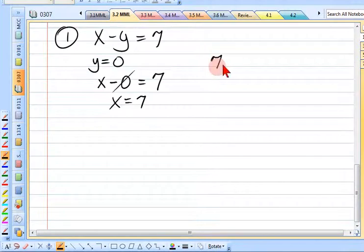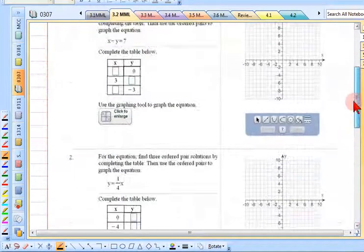Number one has x minus y equals 7. And the first thing they give me is y is 0. So what am I supposed to do? I'm supposed to plug in. I am supposed to plug in in the place. Here's the equation. Here's the given value from a table. And I need to plug it in. It's going to be x minus 0 is equal to 7. Well, what's x minus 0? Just x is 7.